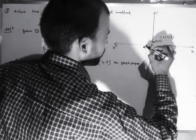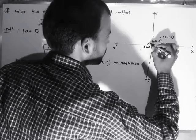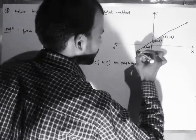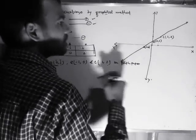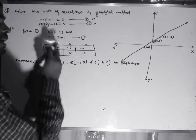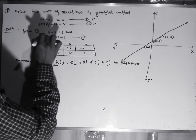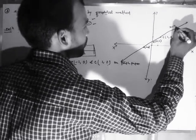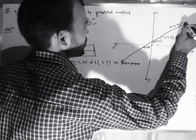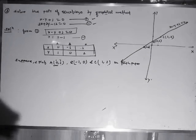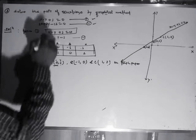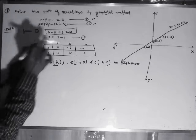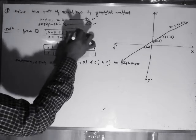With the help of a meter scale, we have to draw a straight line touching these three points and extend it on both sides. This graph line will be the graph line for the equation x minus y plus 1 equals 0. Similarly, we now have to draw a graph for 3x plus 2y minus 12 equals 0.